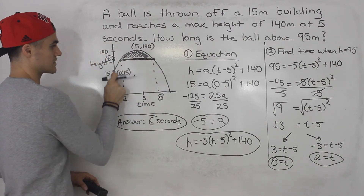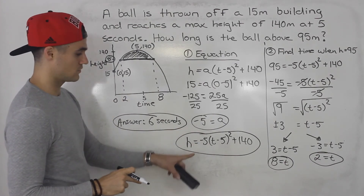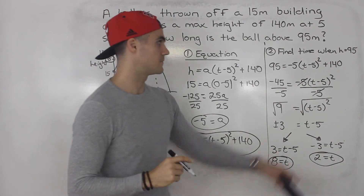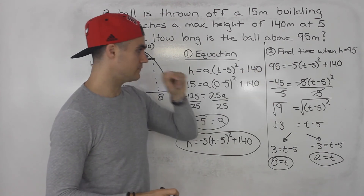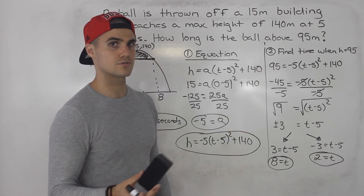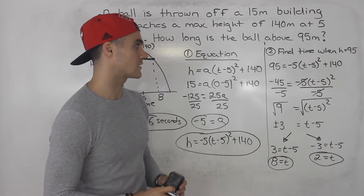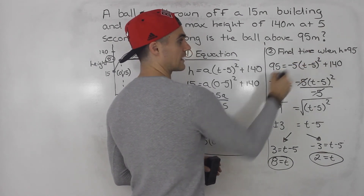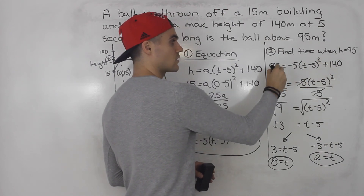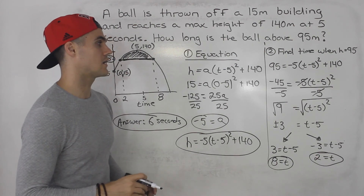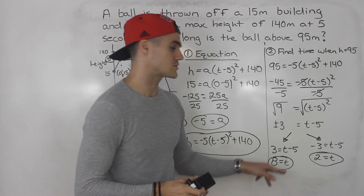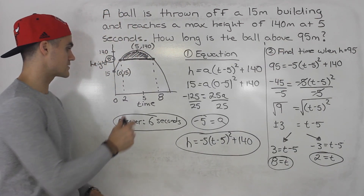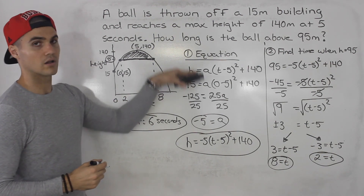So two steps: we first found the equation using the vertex and the y-intercept to solve for the a value. Then with the equation we found when the ball reaches a height of 95 meters, giving two answers. At that step there are two ways to solve it — you can isolate t directly, or you can expand (t minus 5) squared, foil it out, distribute the negative 5, bring the 95 over to get 0 equals a quadratic, then use the quadratic formula or factor. Either way you get the same answer: six seconds is how long the ball is above 95 meters.